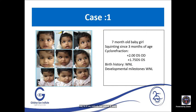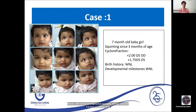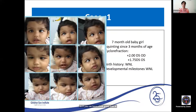Case one is a seven-month-old baby girl brought with complaints of squinting since three months of age. She has a perfectly normal birth history with normal developmental milestones. On nine-gaze pictures, you can see a right convergent squint with fairly okay abduction — no particular pattern. Her parents are very concerned as it has been present since three months of age.